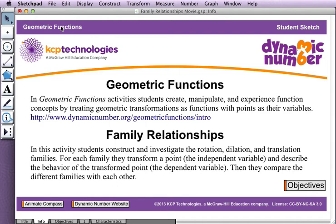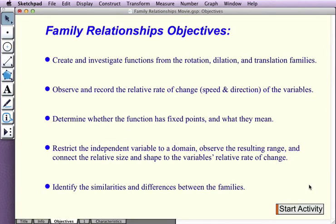In this activity, students construct and investigate the rotation, dilation, and translation families. Their objectives are to compare the relative rate of change of the variables, locate fixed points, use a restricted domain to compare the shape and size of the domain and range, and use these observations to compare the families with each other.